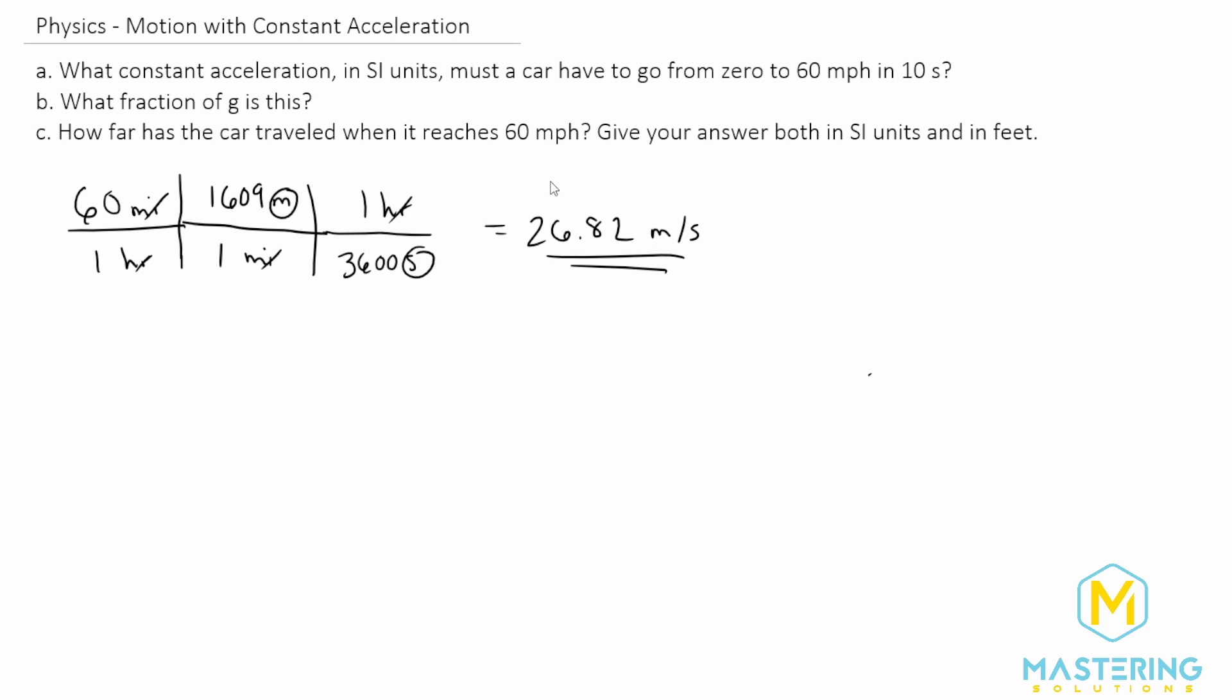Whenever you have a number that is not the final number you're looking for, you want to use as many values as you can. It will give you a more precise number at the very end. So I'm going to go to two decimal places. I think it's okay for this problem.